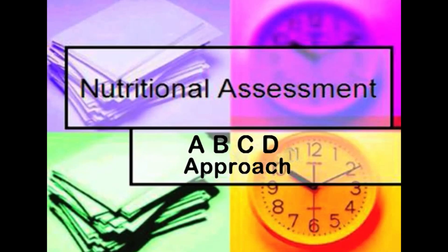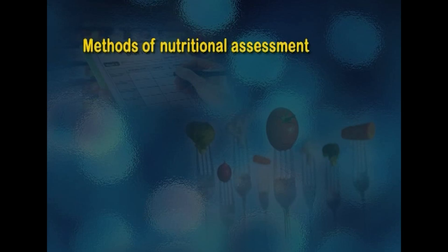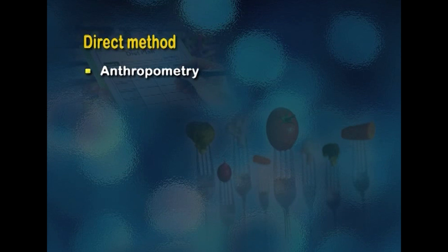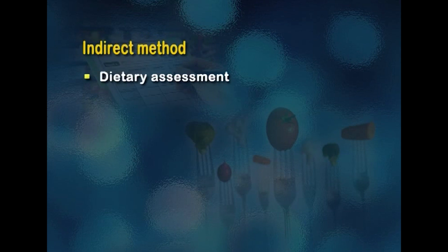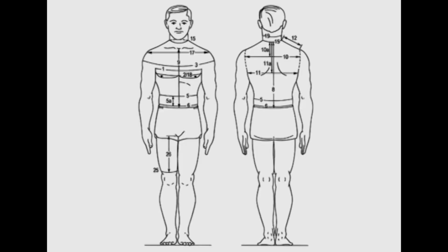Now let us discuss the various methods of nutritional assessment. They are categorized into four types, called the ABCD approach. The nutritional assessment methods are divided into two major categories: the direct and indirect methods. The direct method includes anthropometric measurements, biochemical tests, and clinical examination, whereas the indirect method includes dietary assessment and vital health statistics.